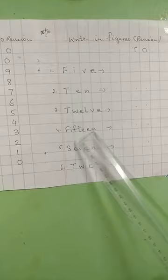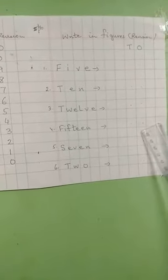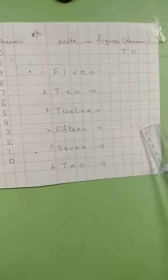Next one, Fifteen, you will write the numbers below T and O, 1, 5, 15.